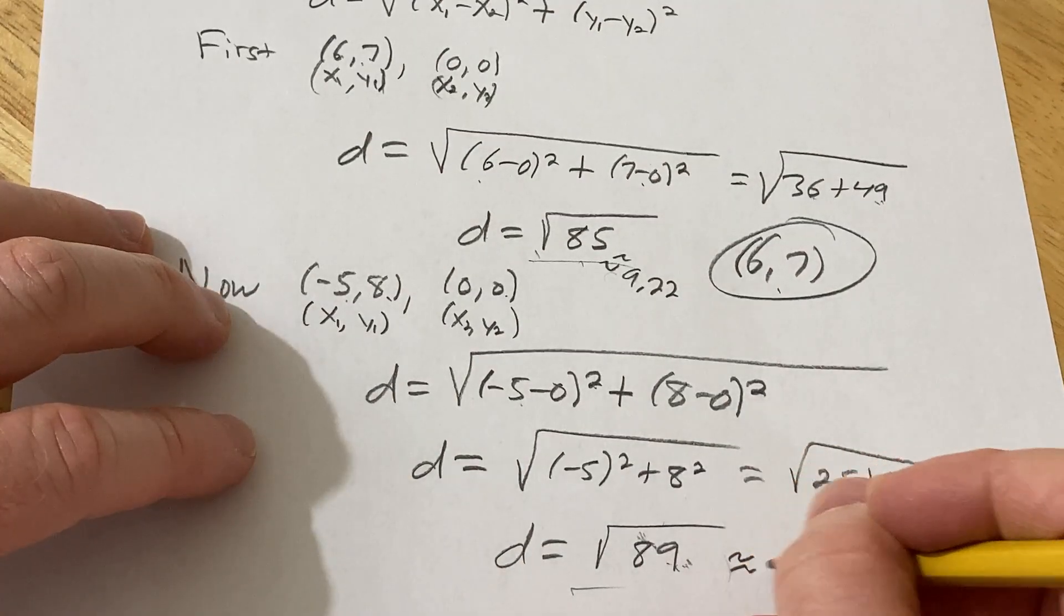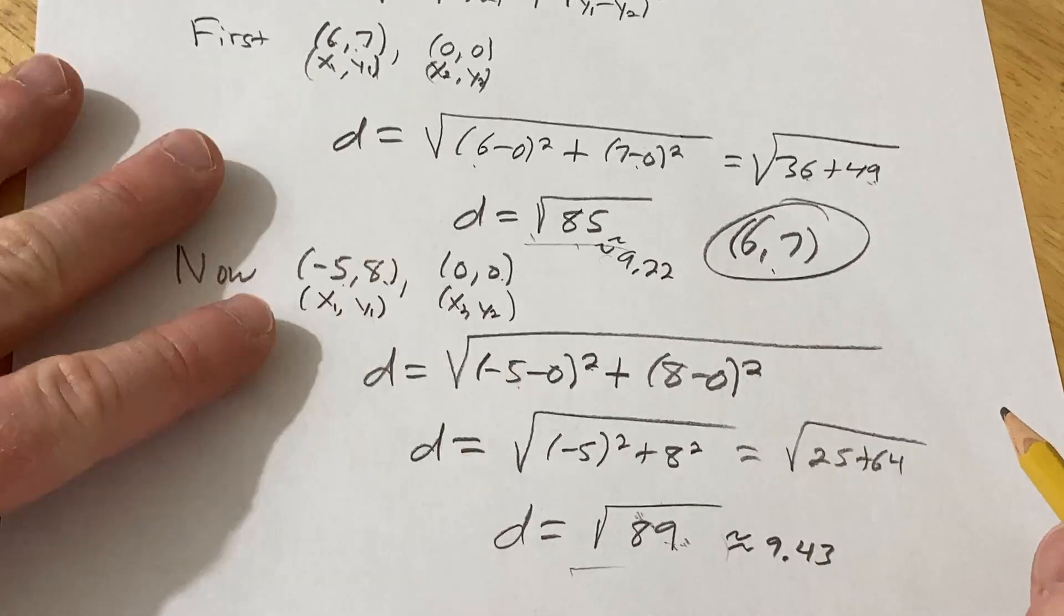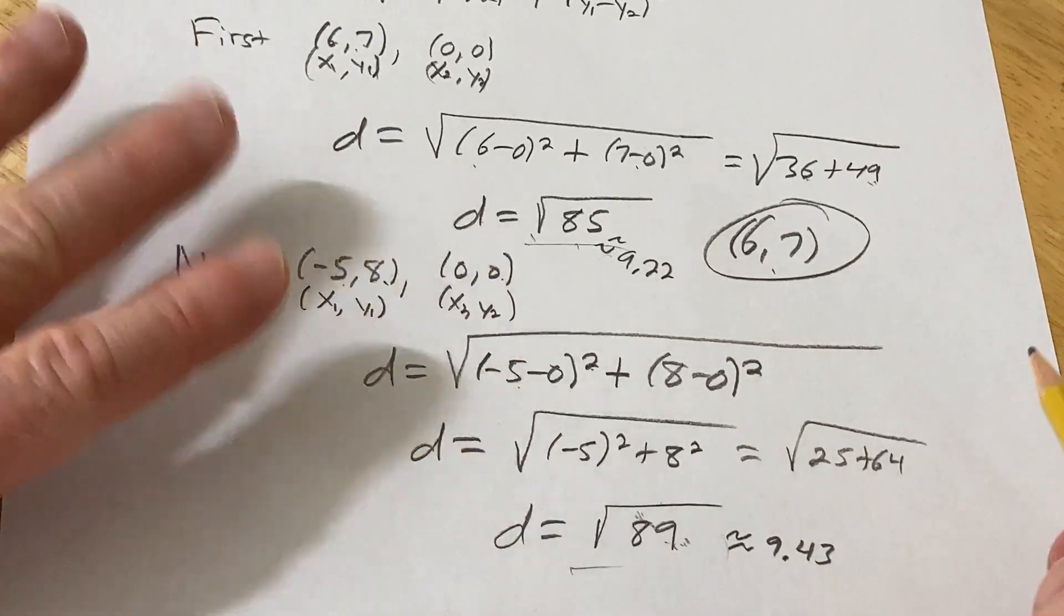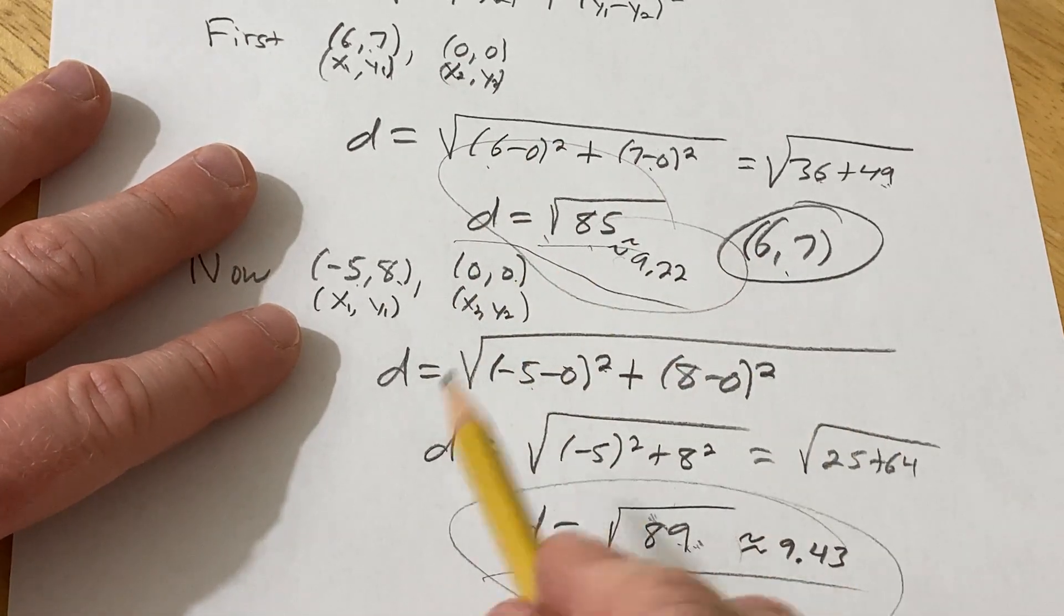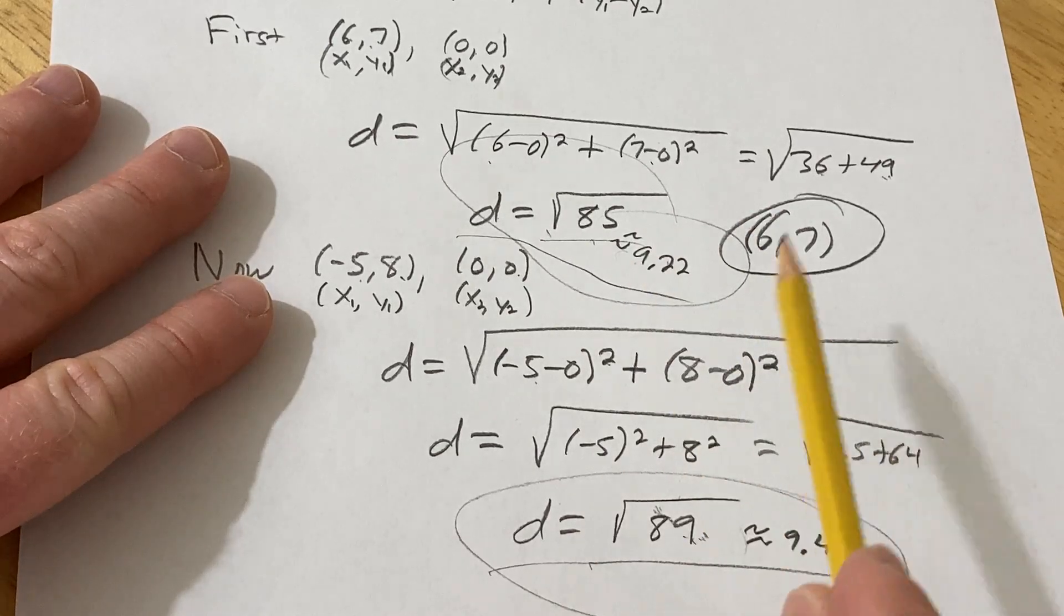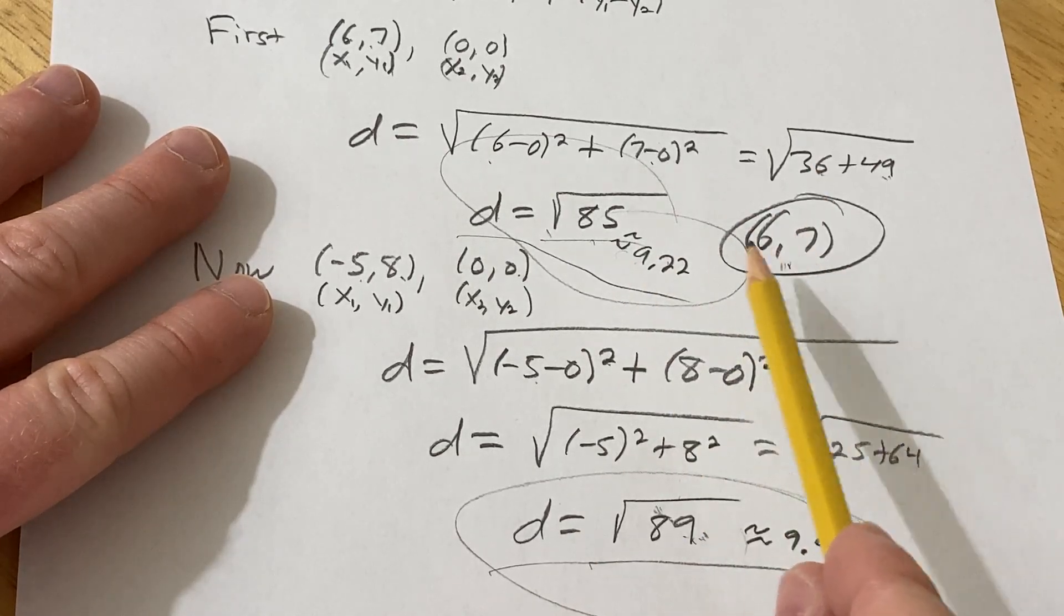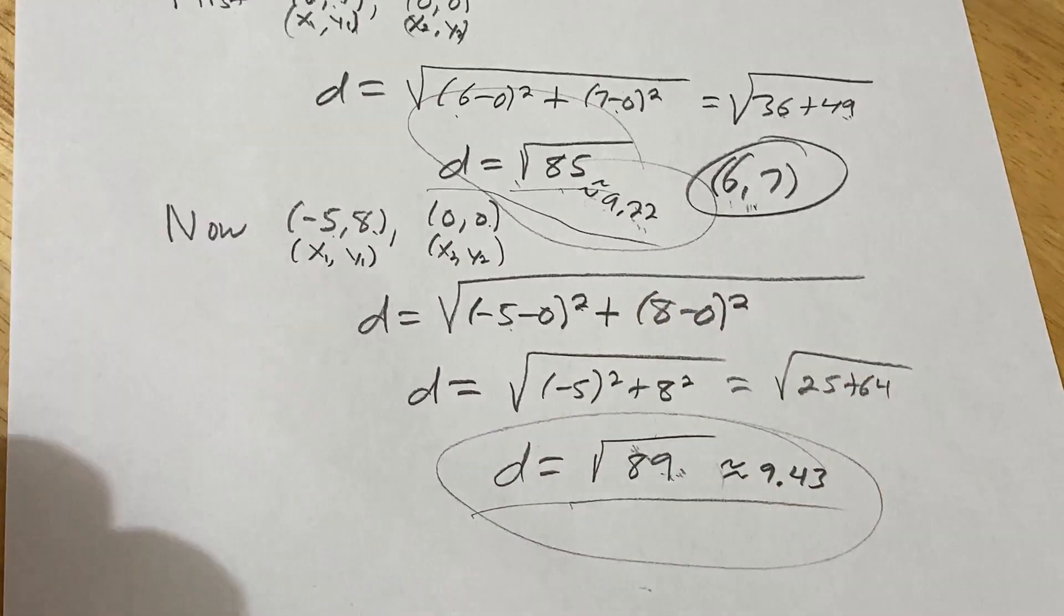Yeah, pretty close. So perhaps just graphing these and looking at them would not have been super instructive. So in any case, I wanted to show you how to use the distance formula, and that's why I jumped into it that way. But very interesting, right? So very close. And this one is closer because this number is smaller, right? The closer number has a smaller distance. I hope this video has been helpful to someone. Good luck.